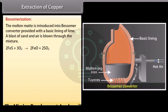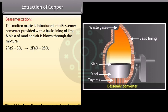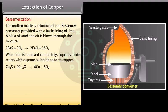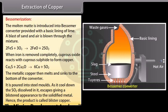The slag floats over a molten layer consisting chiefly of Cu2S and a little FES called mate. Bessemerization: The molten mate is now introduced into Bessemer converter provided with a basic lining of lime. The blast of sand and air is blown through the mixture. FeO is removed as FeSiO3. When iron is removed completely, cuprous oxide reacts with cuprous sulphide to form copper. The metallic copper then melts and sinks to the bottom of the converter. It is poured into steel molds. As it cools down, the SO2 dissolved in it escapes giving a blistered appearance to the solidified metal. Hence, the product is called blister copper. It contains about 98% copper. Blister copper is refined electrolytically.